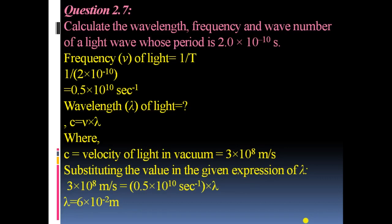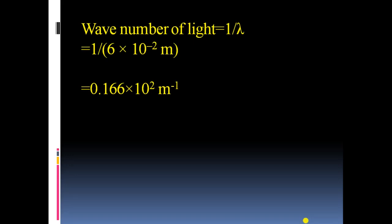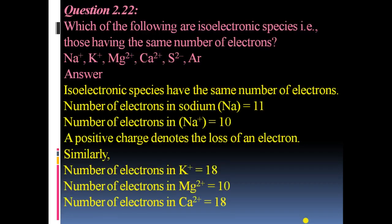Question 7: Calculate the wavelength, frequency, and wave number of a light wave whose period is 2 × 10⁻¹⁰ s. Frequency = 1/T = 1/(2 × 10⁻¹⁰) = 0.5 × 10¹⁰ s⁻¹. Using C = νλ, where C = 3 × 10⁸ m/s, wavelength = 6 × 10⁻² m. Wave number = 1/λ = 0.166 × 10² m⁻¹.